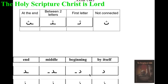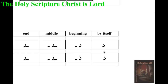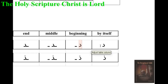See how easy it is. Letter Dal by itself and letter Dal in the beginning look the same. All those letters which cannot connect from the left — when they are in the beginning they look the same as when they are by themselves. Why? Because they are not connected. Remember, when letters are by themselves they go to their original form, and when they are at the beginning they still look the same as if they are by themselves.